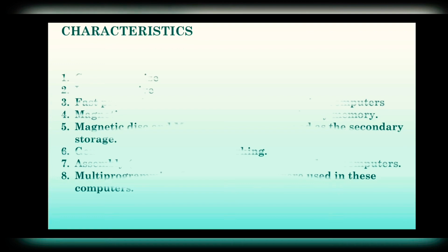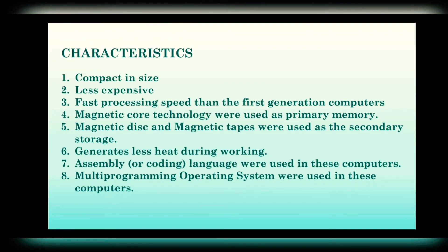Now we will discuss a few characteristics of this generation. Number 1: Compact in size. Number 2: Less expensive. Number 3: Fast processing speed than the first generation computers. Number 4: Magnetic core technology was used as primary memory. Number 5: Magnetic disks and magnetic tapes were used as secondary storage. Number 6: Generates less heat during working. Number 7: Assembly or coding language were used. Number 8: Multi-programming operating systems were used in these computers.